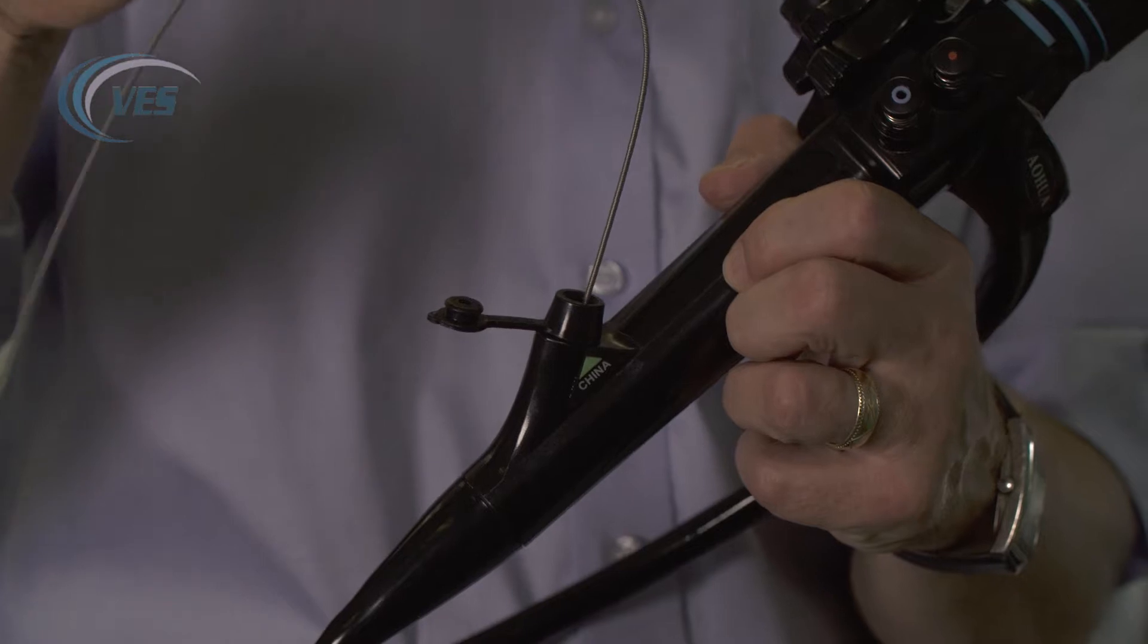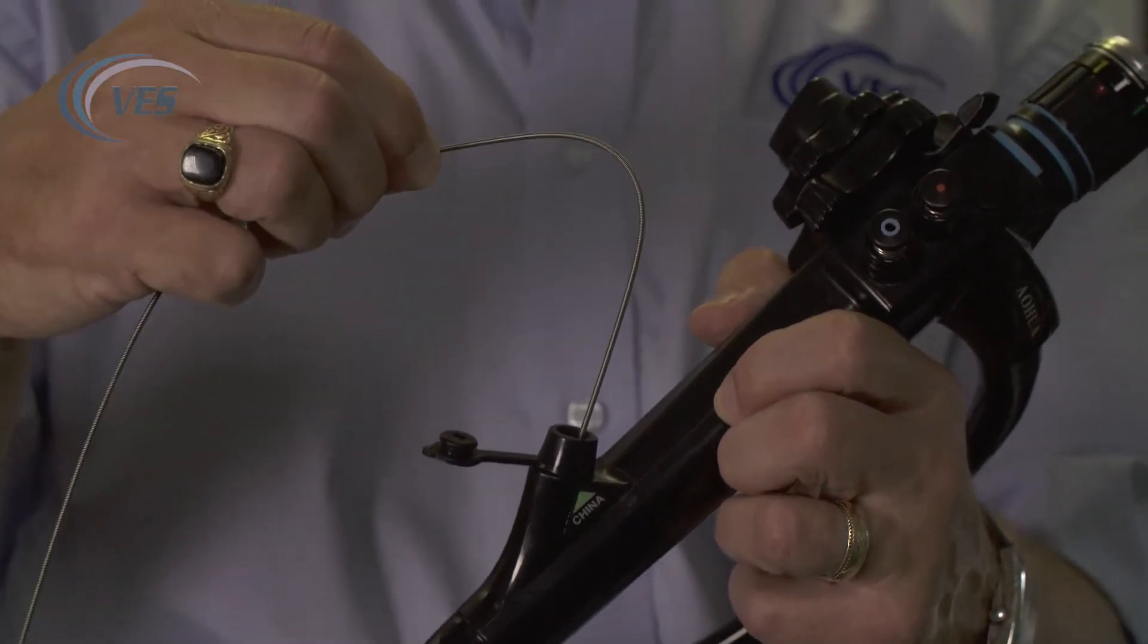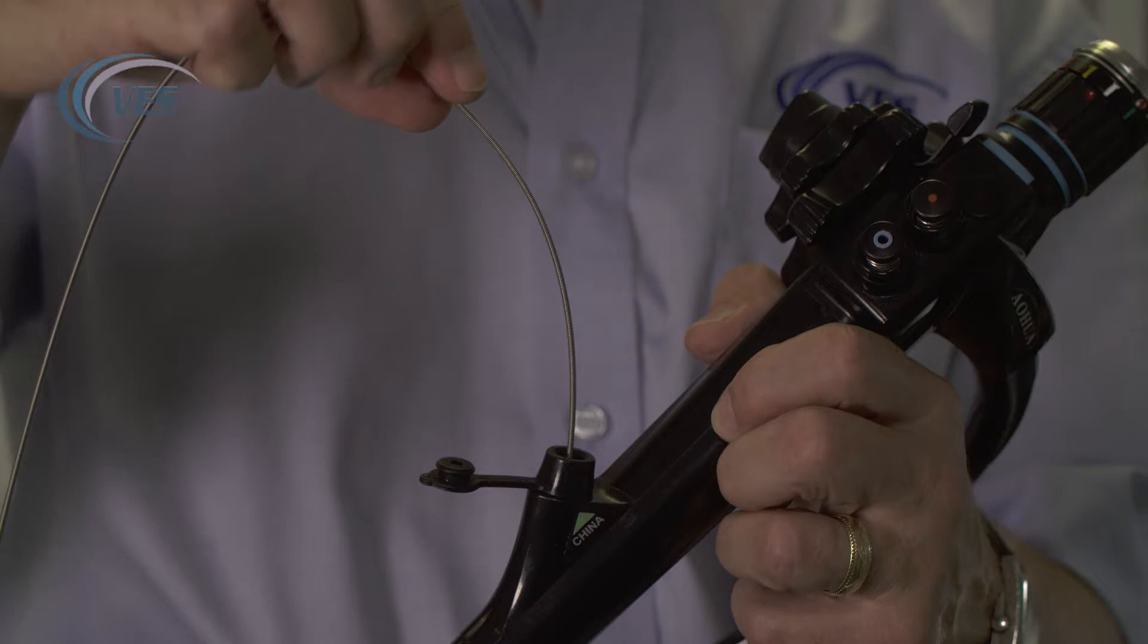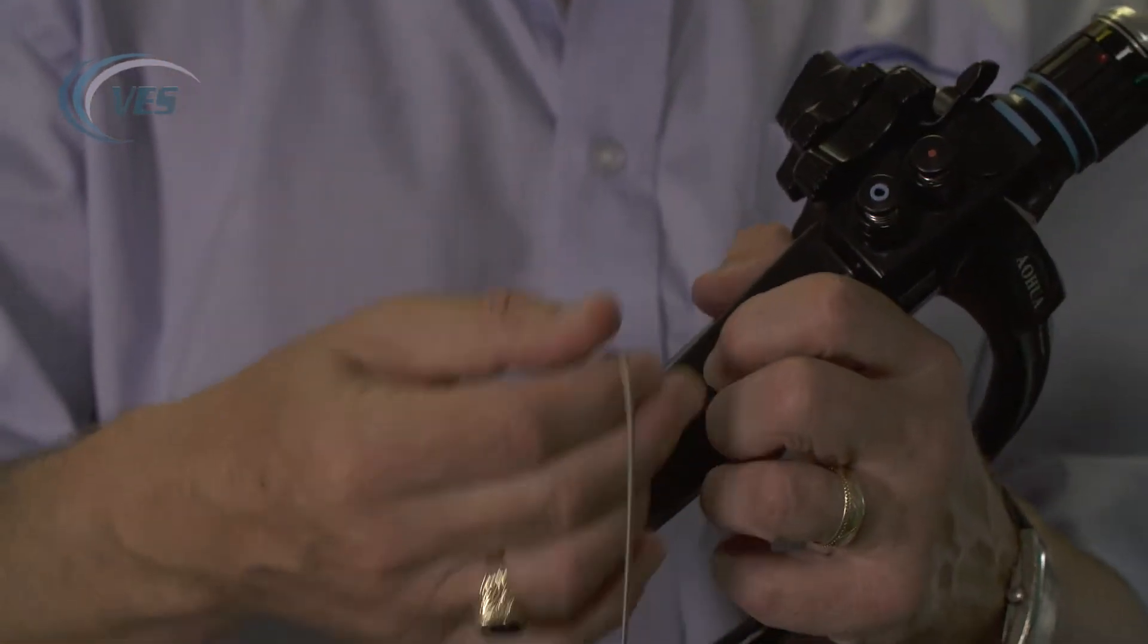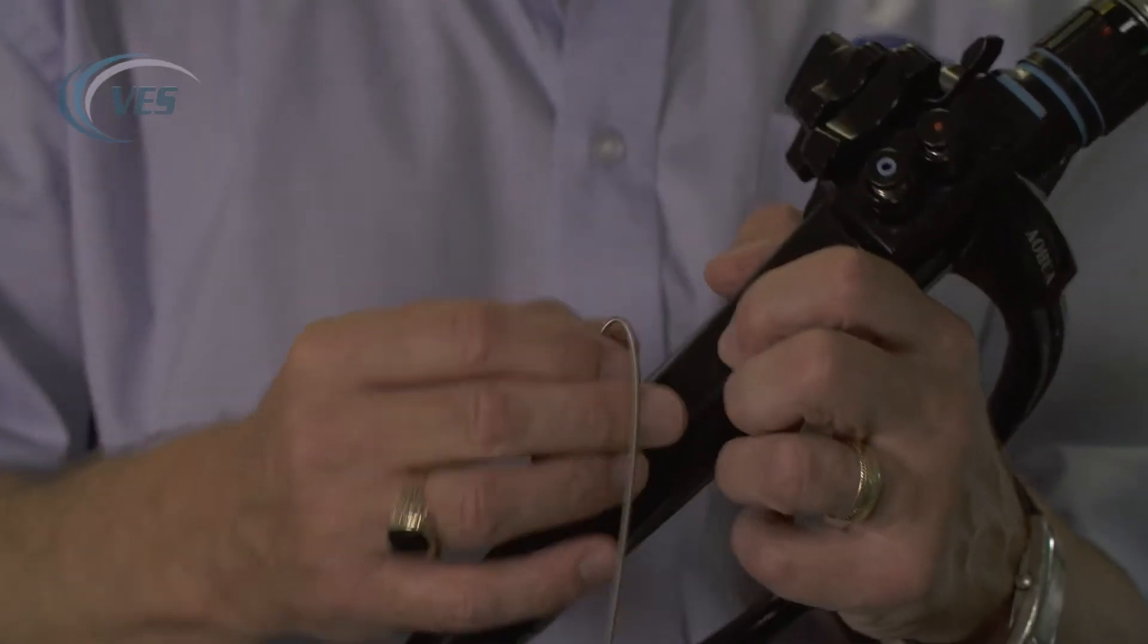Don't feed too far away because, as you can see, what happens here is it can cause a kink. The kink will eventually become sharp and will cause a lot of damage inside the scope.